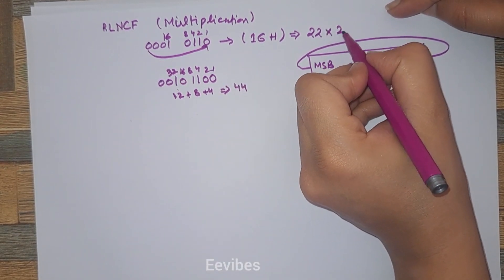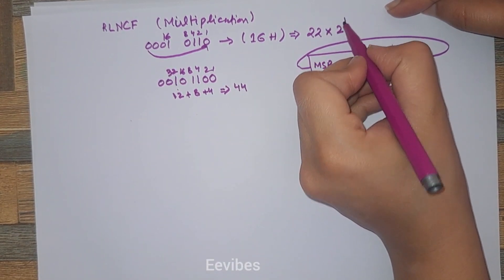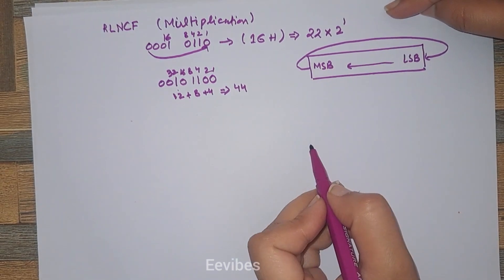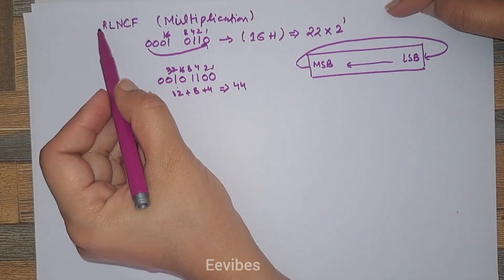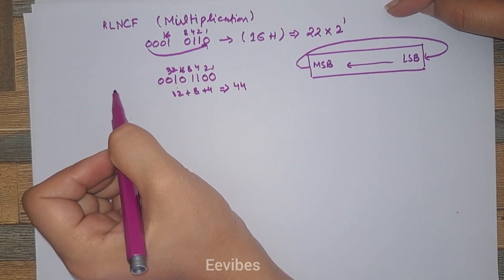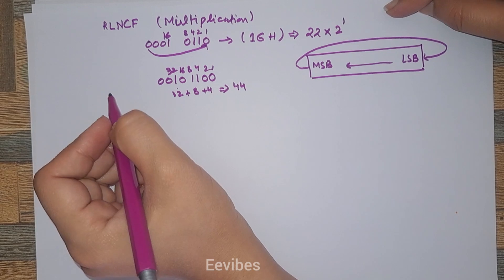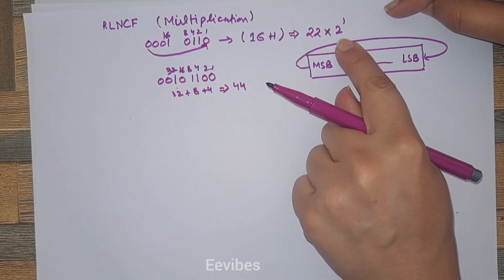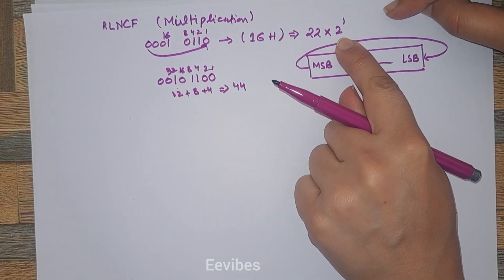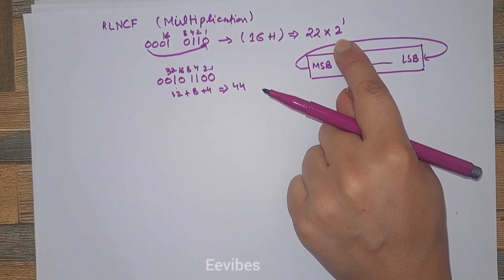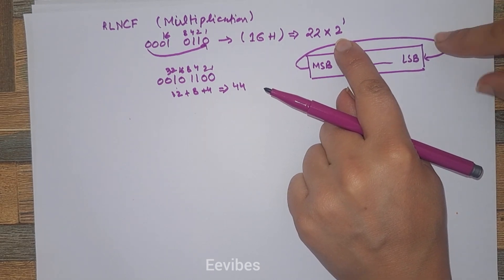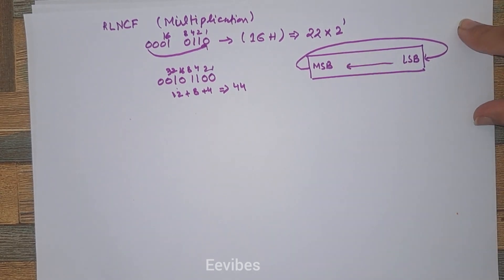In this way, as many rotations as you provide through the rotate instructions, you are actually performing the multiplication or division in the case of left or right rotation respectively.